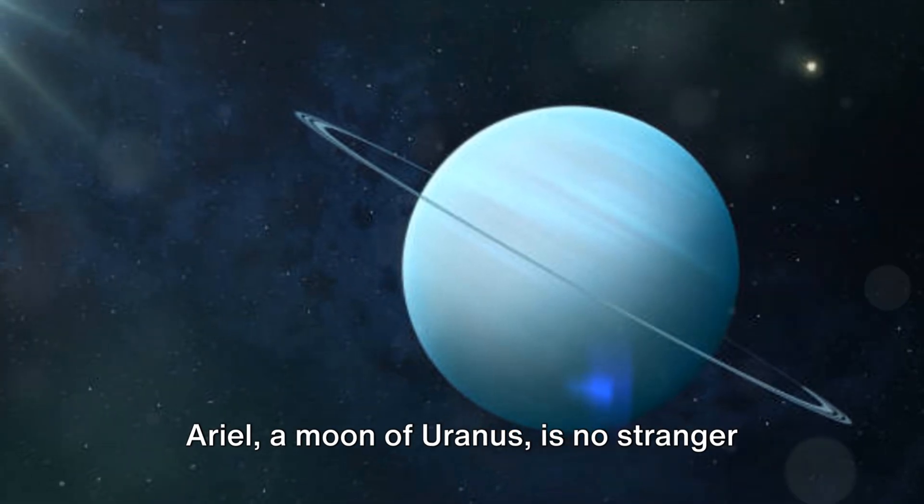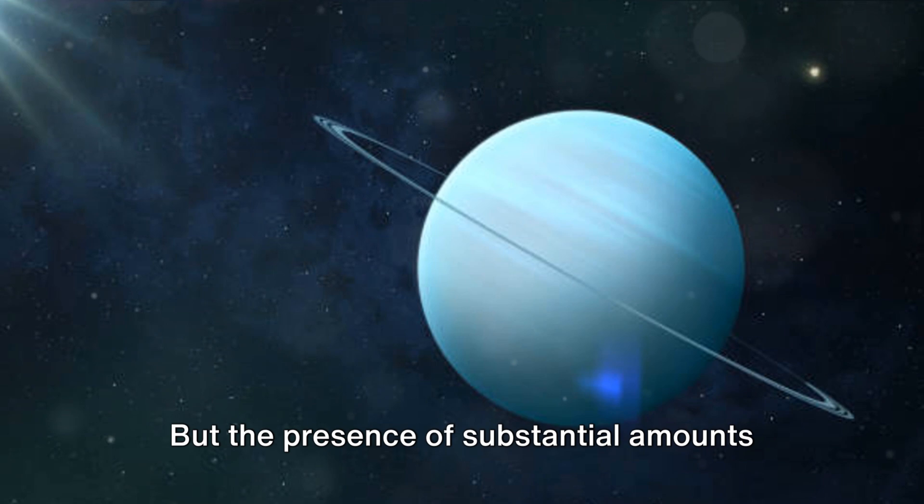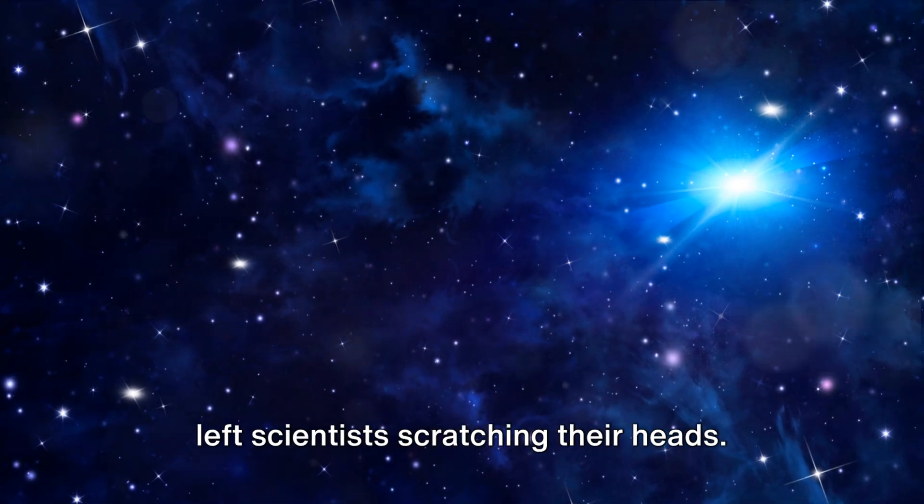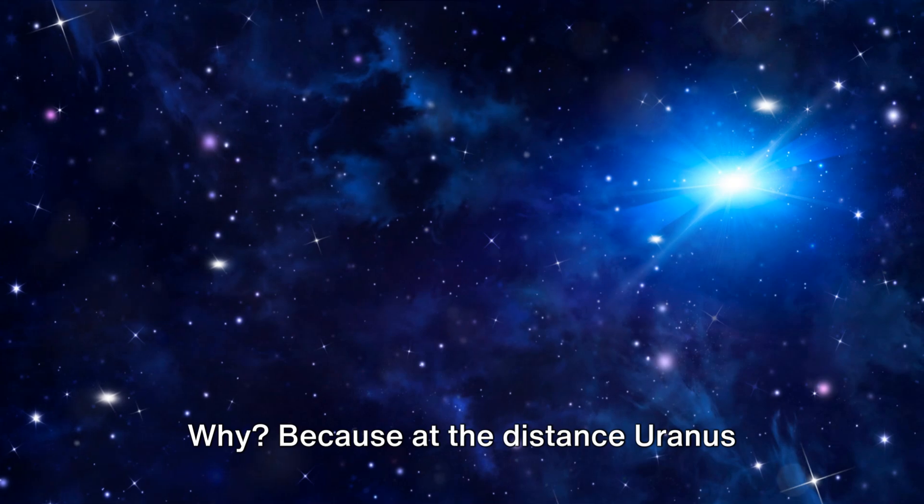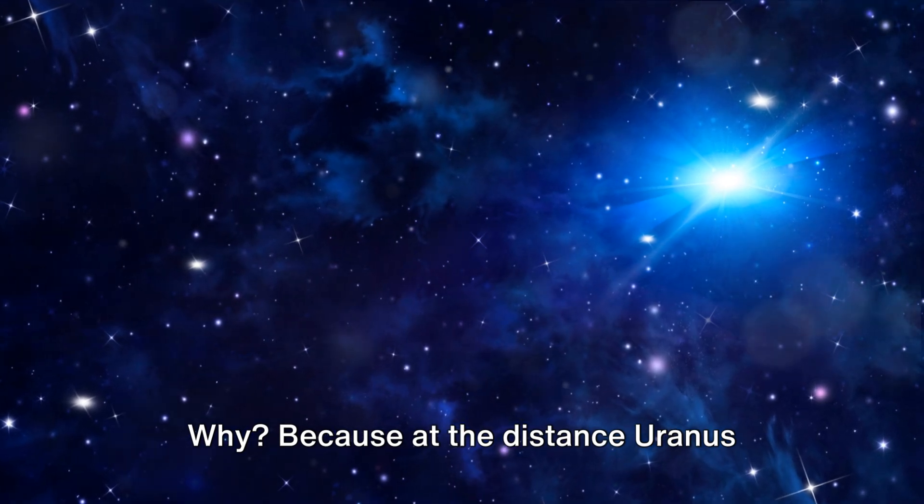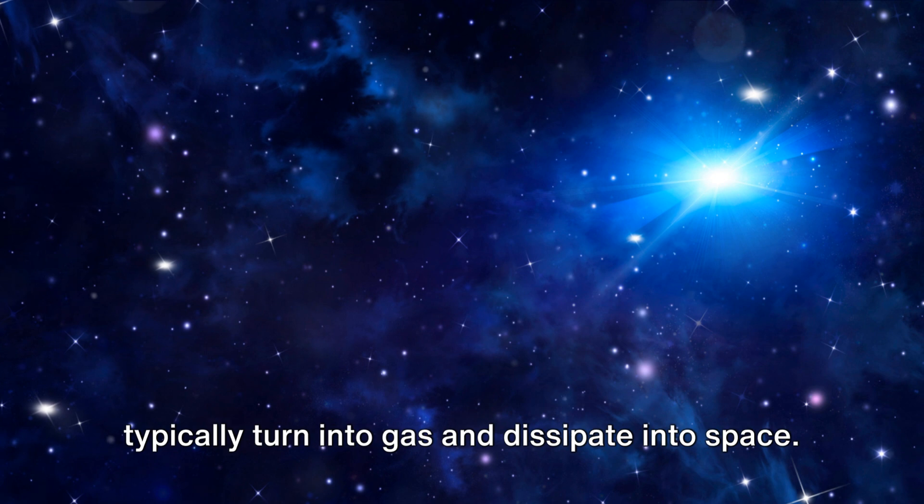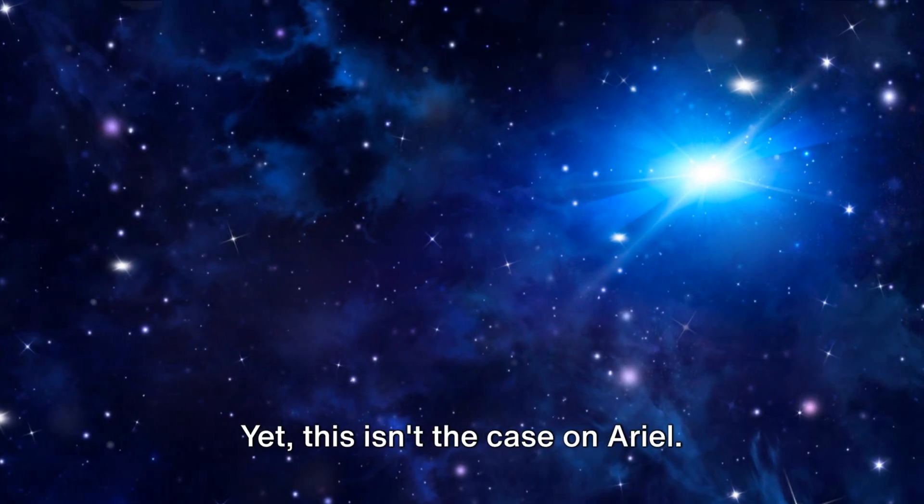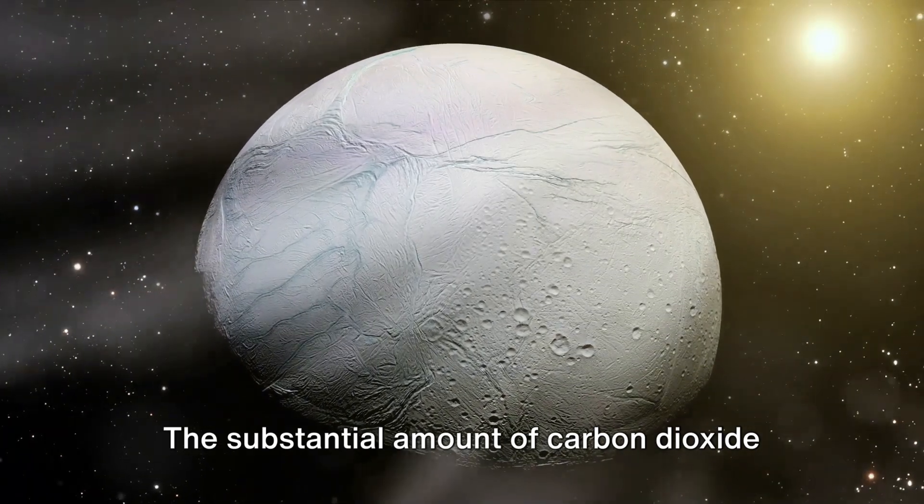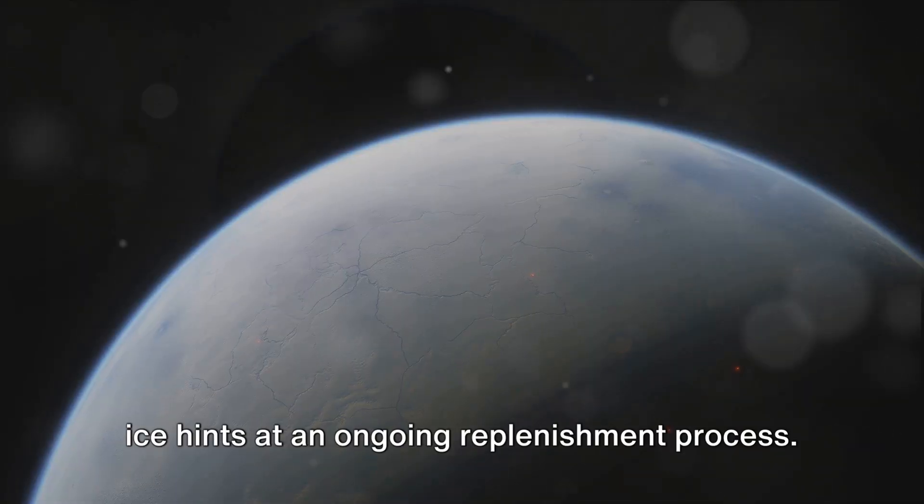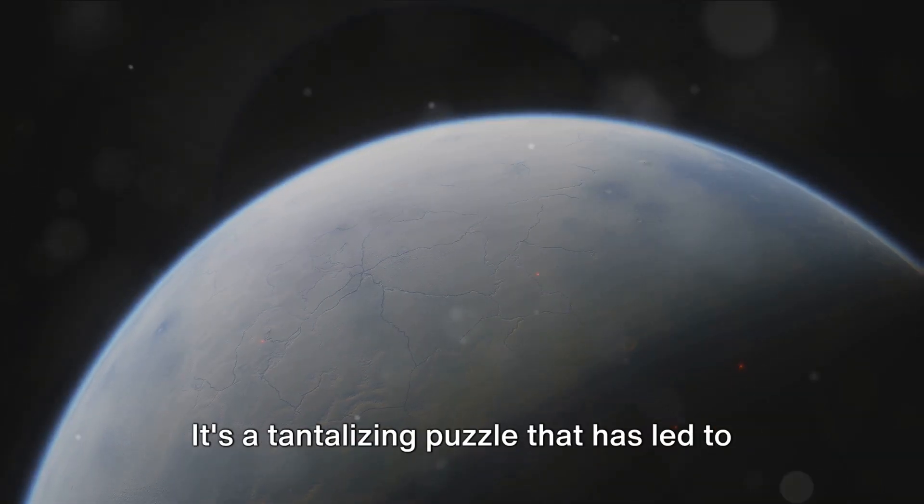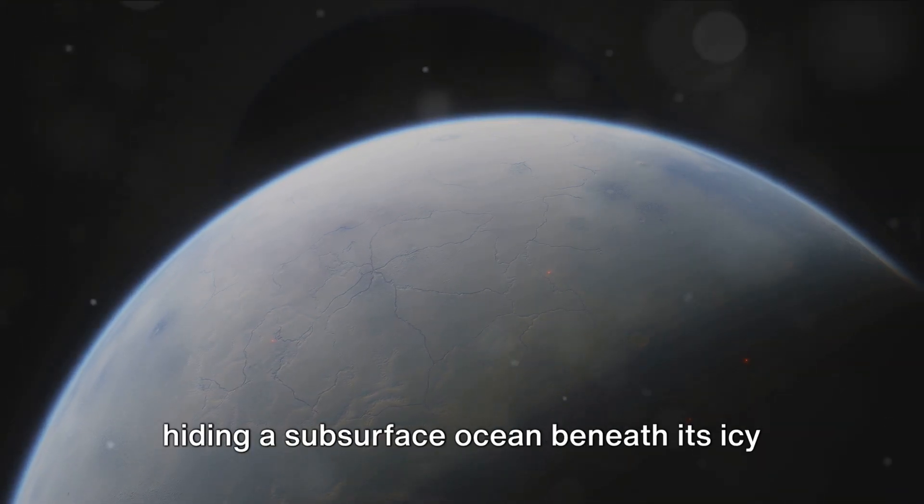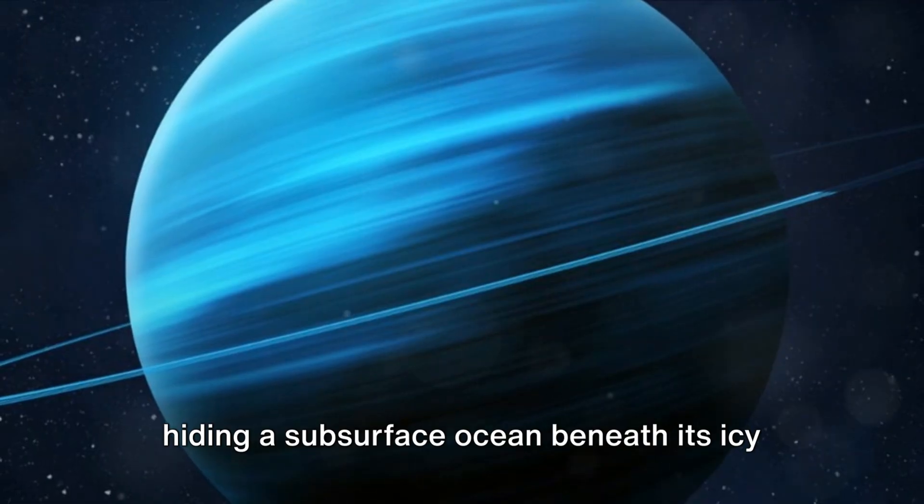Ariel, a moon of Uranus, is no stranger to mystery, but the presence of substantial amounts of carbon dioxide ice on its surface has left scientists scratching their heads. Why? Because at the distance Uranus orbits from the sun, carbon dioxide would typically turn into gas and dissipate into space. Yet this isn't the case on Ariel. The substantial amount of carbon dioxide ice hints at an ongoing replenishment process. It's a tantalizing puzzle that has led to a compelling hypothesis. Could Ariel be hiding a subsurface ocean beneath its icy crust?